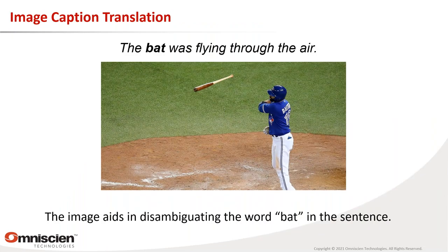One research area is image-caption translation. Since image processing and text processing now use very similar deep learning technologies, combining them was a natural step. Example: 'The bat was flying through the air' — 'bat' is ambiguous between an animal and a sports instrument. Without additional context you might translate it as the animal. But if this sentence is accompanied by a picture of a baseball bat being thrown through the air, the image clearly disambiguates the correct meaning.